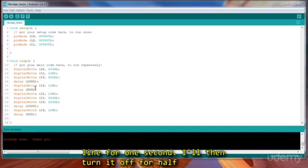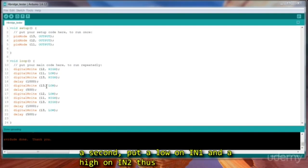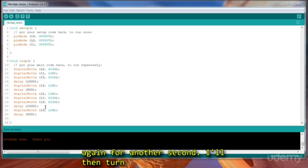I'll then turn it off for half a second, put a low on IN1, and a high on IN2, thus reversing the motor, notice it's backwards, and then turn on the enable line HIGH again, then wait for another second. I'll then turn the enable line LOW, wait a half a second, and loop back to the beginning and do it all over again.